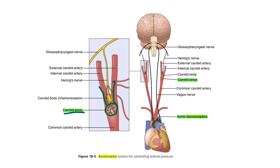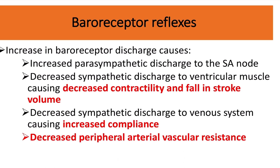Another baroreceptor is located in the arch of the aorta — this is the aortic baroreceptor. Both the aortic and carotid baroreceptors are responsible for responding to increased blood pressure. The carotid sinus conveys signals via the glossopharyngeal nerve, and the aortic baroreceptor sends signals via the vagus nerve.